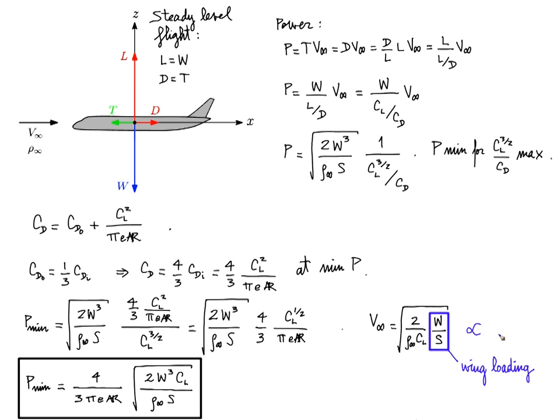Now we also see that V is inversely proportional to the square root of the density, meaning that when you're flying at higher altitudes where rho is lower, you need to fly at a higher speed because you need to generate enough lift to compensate for the weight.